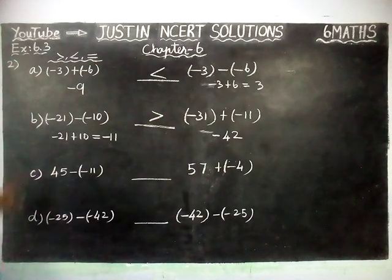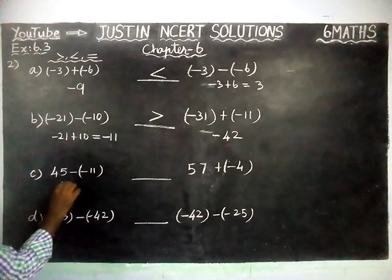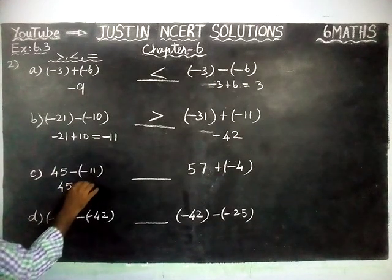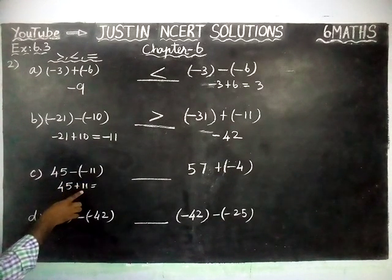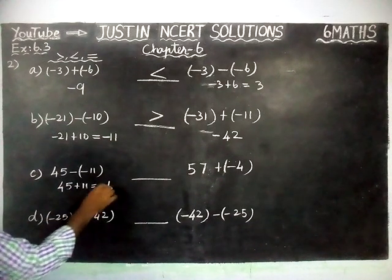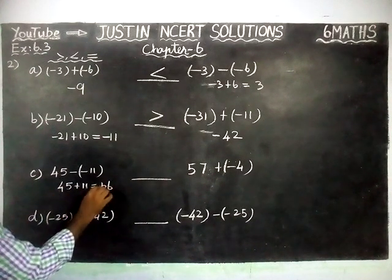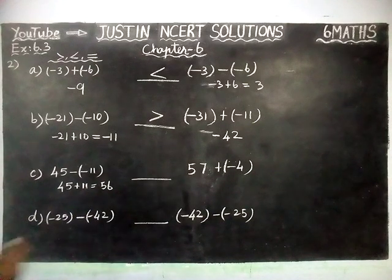Then, Part C: 45, minus of minus 11 gives plus 11. Both have the same sign, so we add them. 5 plus 1 is 6, 4 plus 1 is 5. So, the left hand side answer is 56.